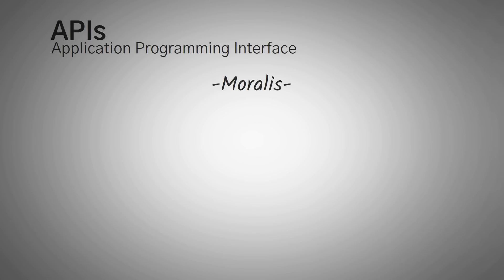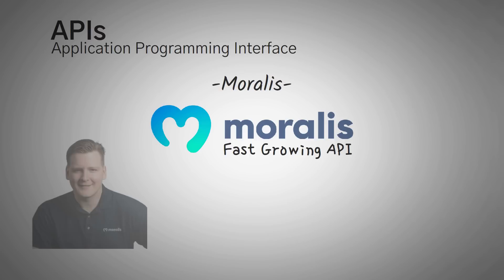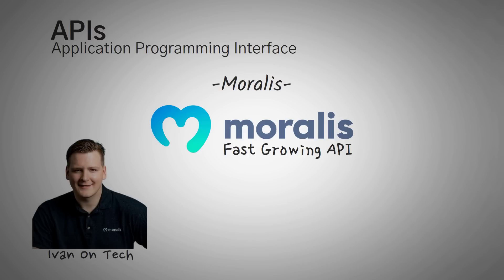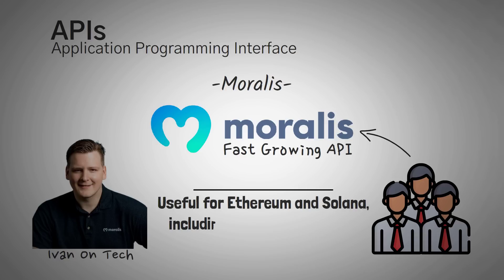Next up is Moralis. If you're developing anything in Web3, you've probably heard about Moralis. Moralis is a fast-growing API that was started by YouTube's own Ivan on Tech. It's been growing very quickly, and their main customers are enterprise companies. They have built very useful APIs for Ethereum and Solana, including information about NFTs and token data.